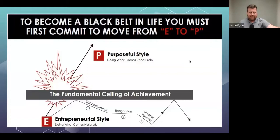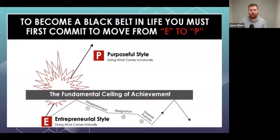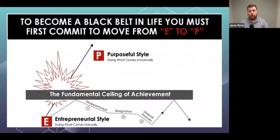This is the classic E to P example from six personal perspectives. The entrepreneurial style is doing what comes naturally versus the purposeful style of doing what comes unnaturally. That agent doing over 50 transactions is in the E category — he's just doing what comes naturally and it's fantastic, but it's only going to last so long. Using your smart database takes that to the next level, becoming purposeful. Another way to say purposeful is being a real business owner — the difference between owning a practice and owning a business. When you own a practice and you go on vacation, your business goes on vacation too.